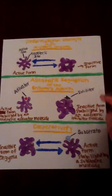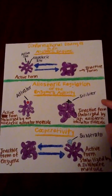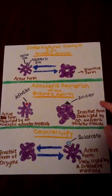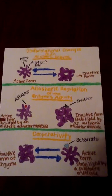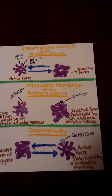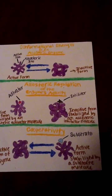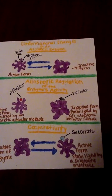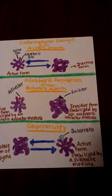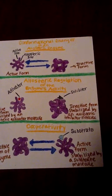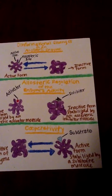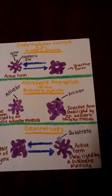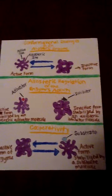Moving to the second picture, this demonstrates allosteric regulation of the enzyme's activity. What takes place here is the opposing effects of an allosteric activator and an allosteric inhibitor on the conformation of all four subunits of an enzyme.